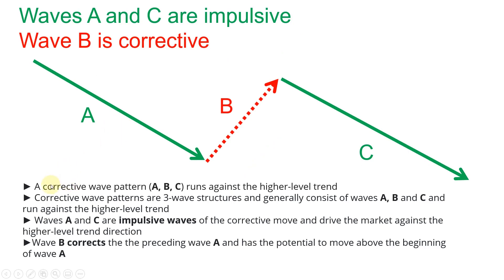There are certain rules for the ABC pattern, similar to the rules in the five-part impulsive wave structure. First, a corrective wave pattern ABC runs against the higher-level trend. They are three-wave structures consisting of waves A, B, and C. Waves A and C are impulsive and drive the market against the higher-level trend direction.